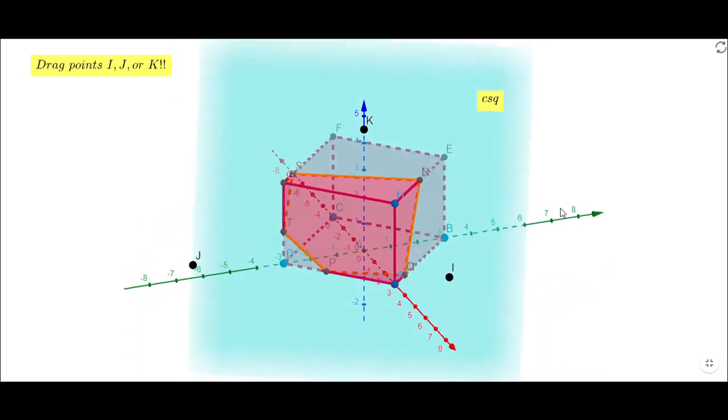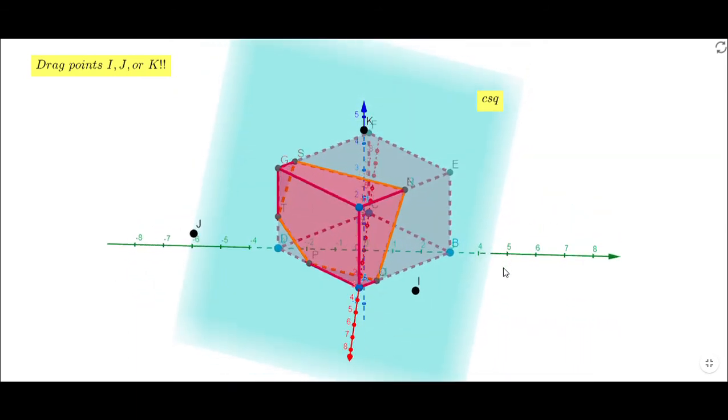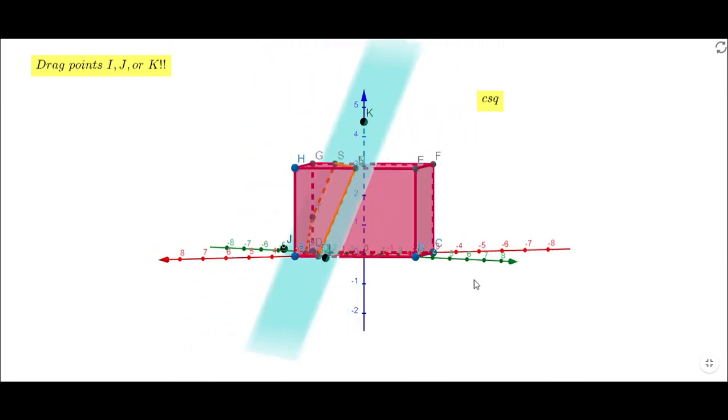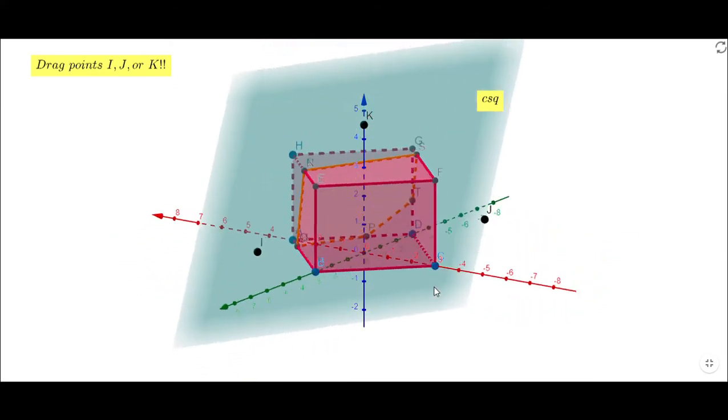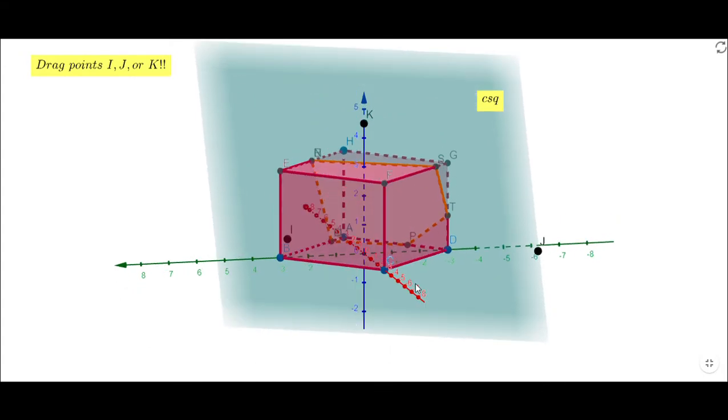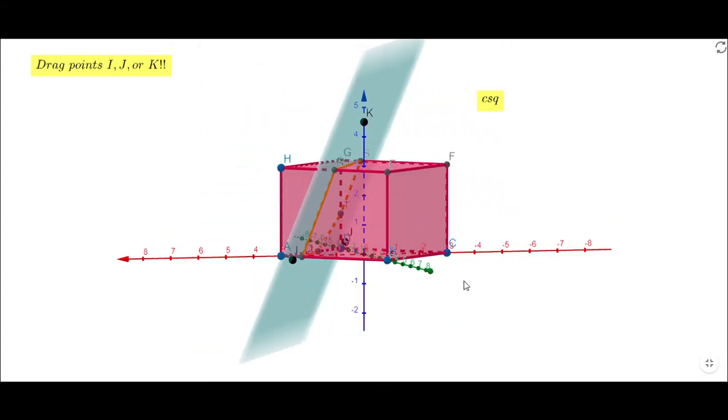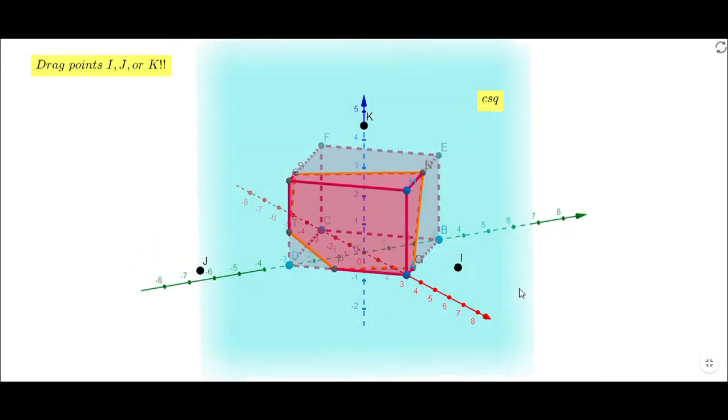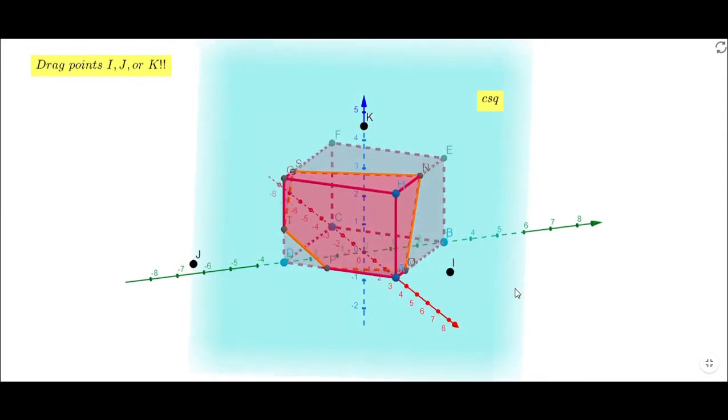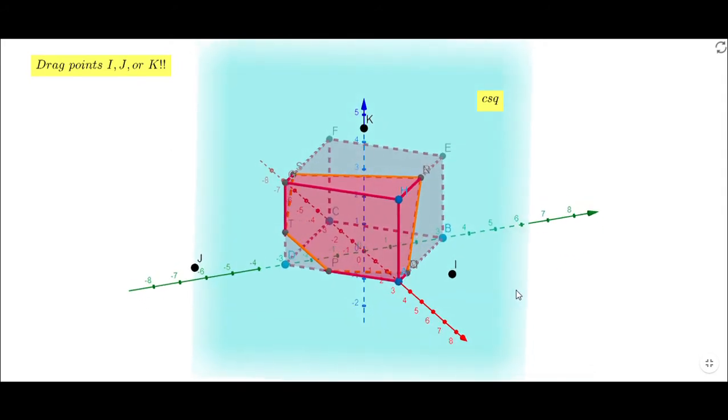On this app, you can rotate the object and see more views. You'll notice depending on your view, the lines of the cross section become dashed or solid. You can also drag these points I, J, or K to get different cross sections.